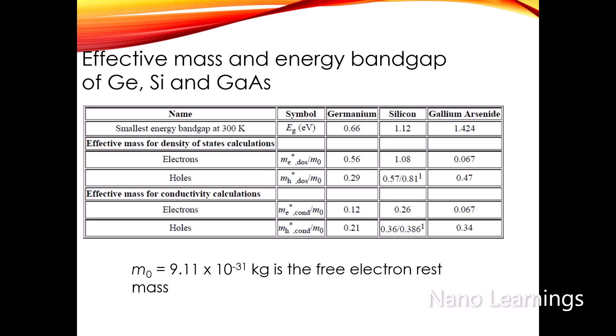This table shows the effective mass and energy band gap of germanium, silicon, and gallium arsenide. Germanium has the smallest band gap, which is around 0.66 electron volts, and gallium arsenide has the highest band gap, which is around 1.424 electron volts. If you look at the effective mass for density of states for electrons and holes, gallium arsenide has the lowest value for electrons and germanium has the lowest value for holes.